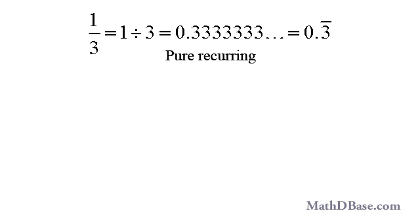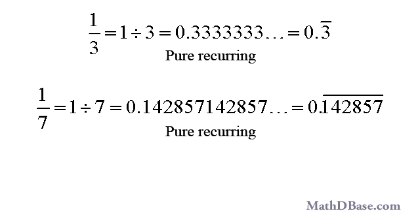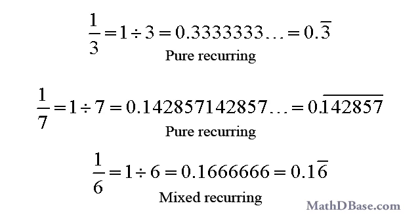For example, one-third is a pure recurring decimal. The digit 3 repeats indefinitely. One-seventh is also a pure recurring decimal, but in this case, a group of six digits, 1, 4, 2, 8, 5, 7, repeats indefinitely. One-sixth is a mixed recurring decimal. The decimal point is followed by a 1, then the digit 6 repeats indefinitely.